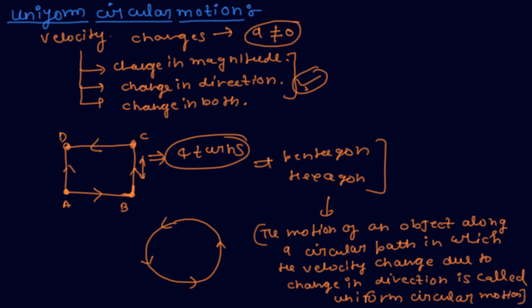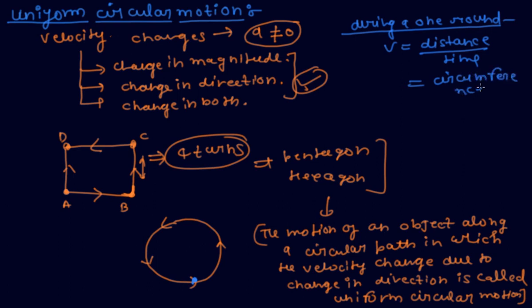If the object takes one round from this point and back to this point again, during one round, speed is distance upon time. The total distance is equal to the circumference of the circle divided by total time. So speed equals 2πr by t.